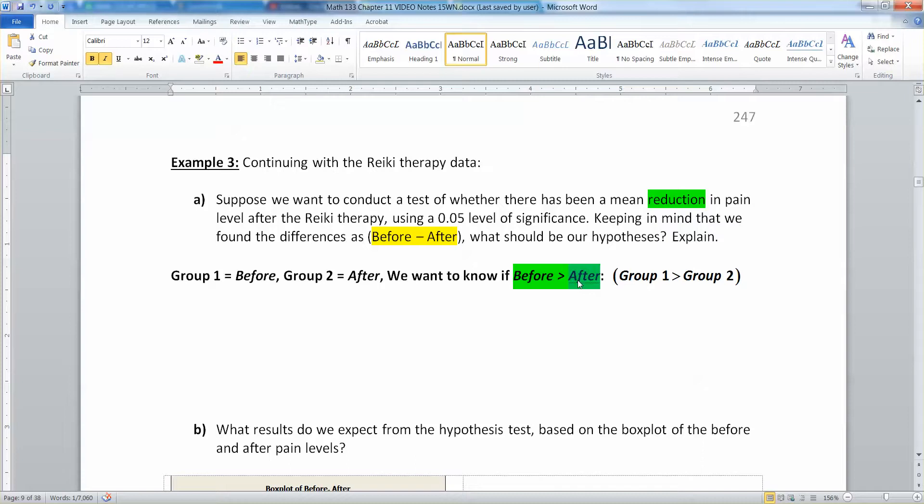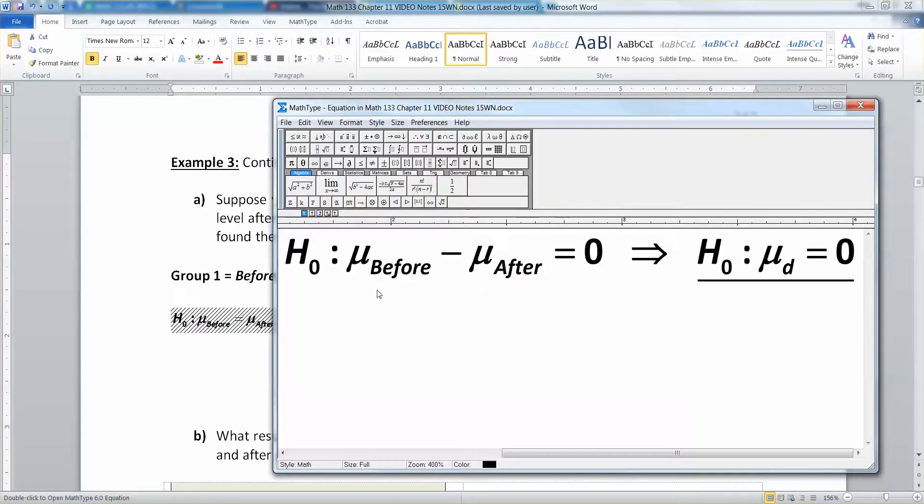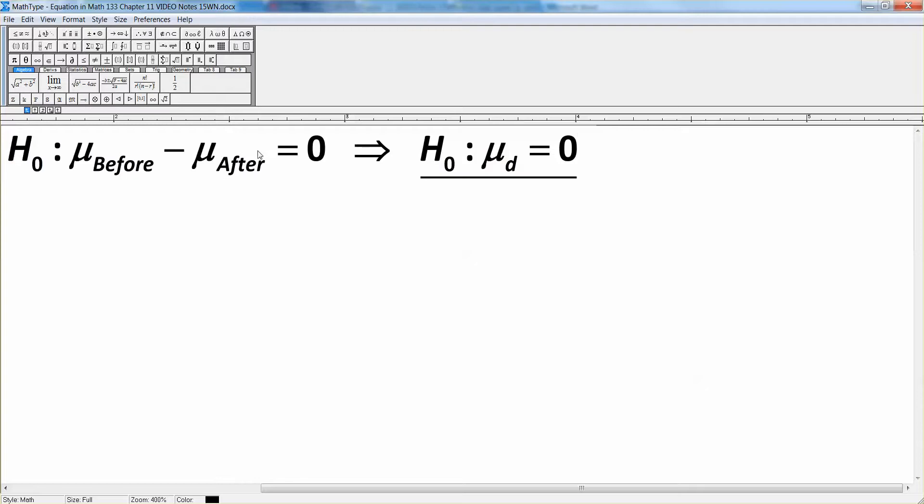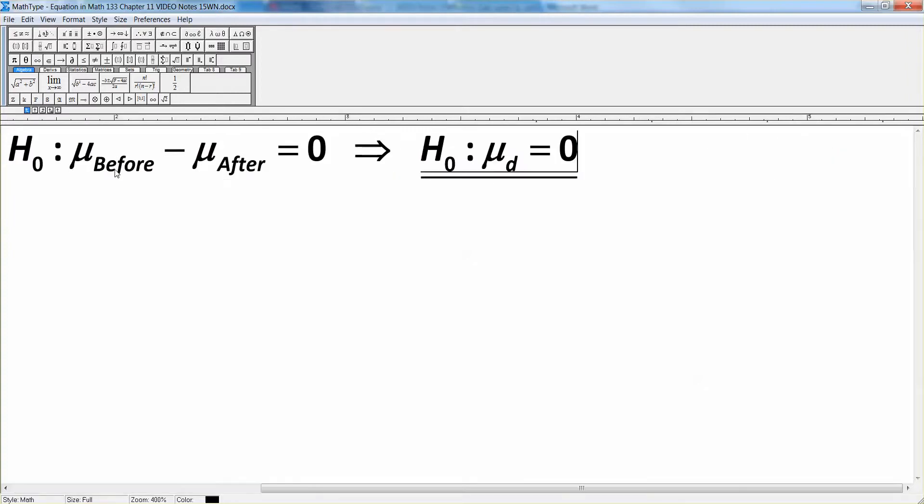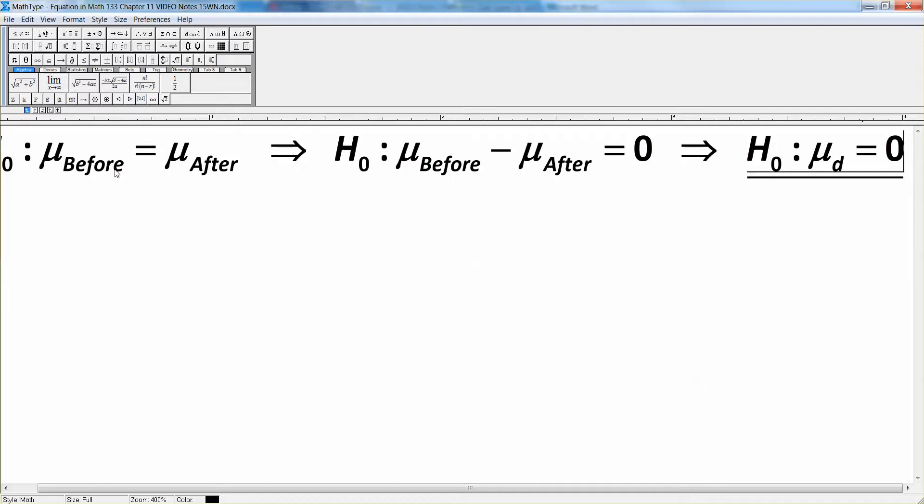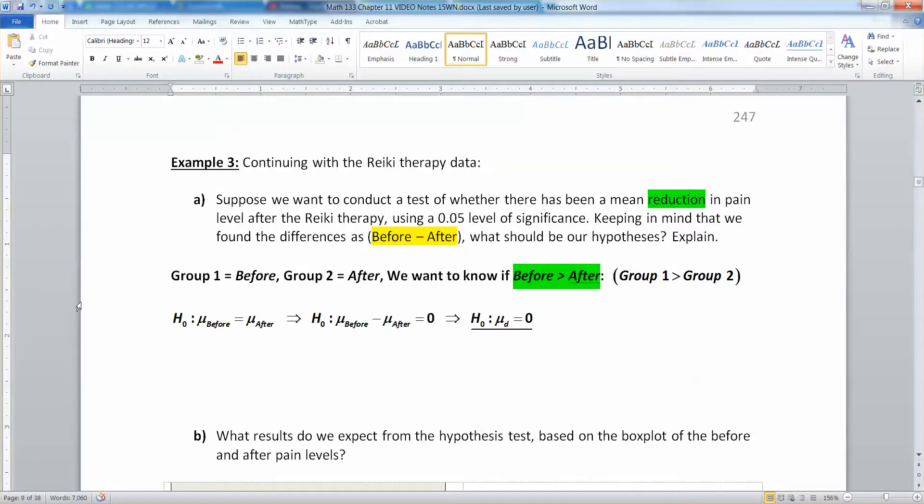If there's a reduction in pain, then the after should be smaller than the before. For the null hypothesis, you assume there is no difference - that the before group and after group are equal to each other. If they're equal, when you subtract them you get no difference, you get zero. Just like eight minus eight is zero. That means your mu_d equals zero. That's the easy one, always zero.